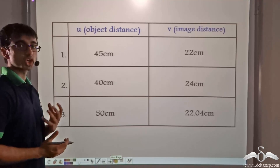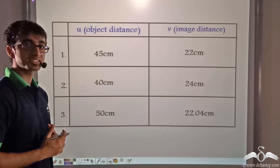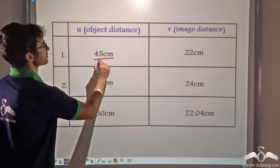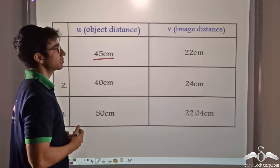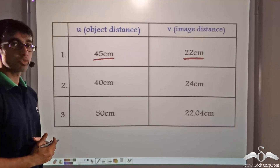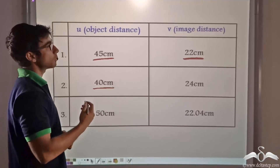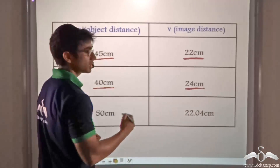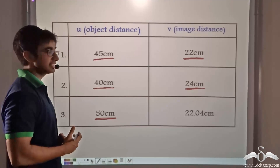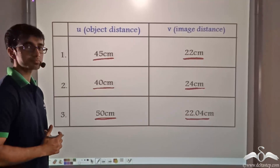We have performed an experiment with the concave mirror and the candle, placing the candle at varying distances from the mirror. At first, we placed the object at a distance of 45 cm from the mirror, and the image was obtained at a distance of 22 cm in front of the mirror. Then at 40 cm, the image was at 24 cm; and when the object was at 50 cm, the image was obtained at 22.04 cm.